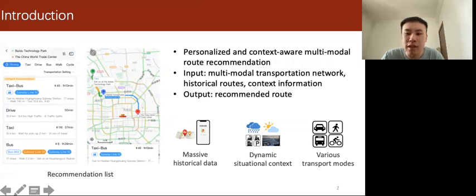For example, the left figure shows a new system that has been deployed on Baidu map, and here our system offers a route by jointly considering taxi and bus.